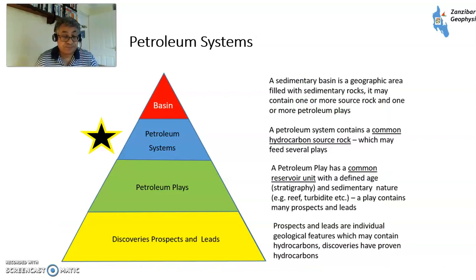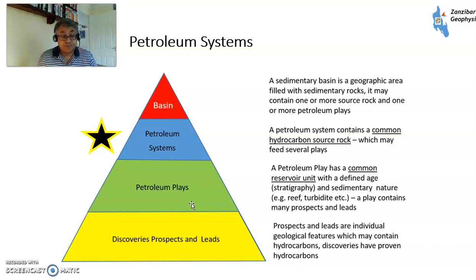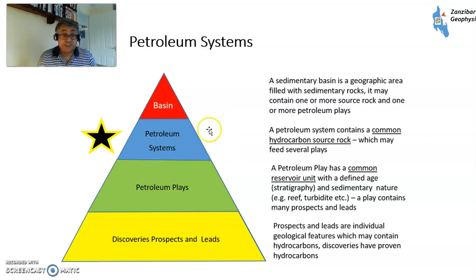So how does this fit into everything together? A petroleum system is located within a basin, which is a geographic area filled with sedimentary rocks that may or may not contain hydrocarbons. Most petroleum systems are focused on the source rock, while plays tend to be focused on the reservoir — for example the Jurassic play, Palaeocene play, and chalk play in the North Sea. In the Northern Central North Sea, the Kimmeridge Clay is the main source rock.